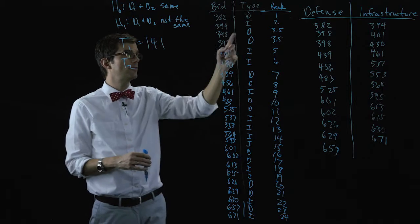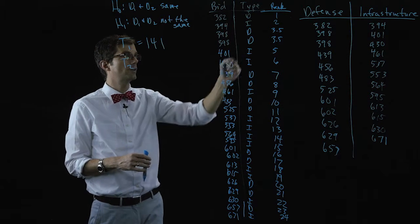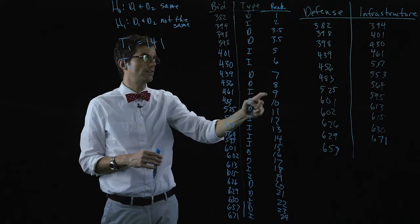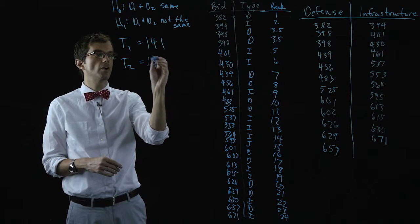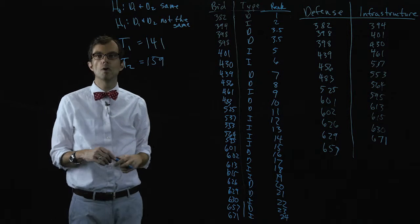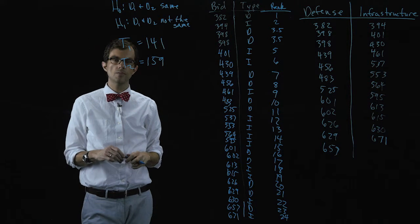Likewise for all the infrastructure related bids, we would go sum those up. Two plus five plus six plus nine and so on and if we do that we get a sum of ranks of one hundred fifty-nine.